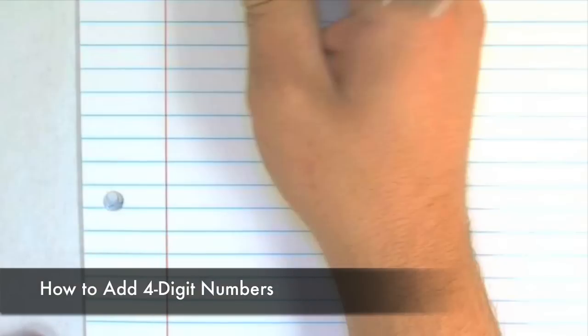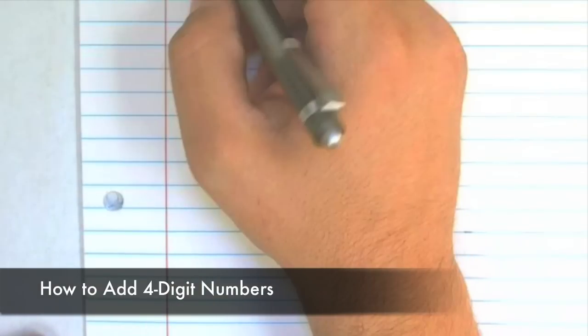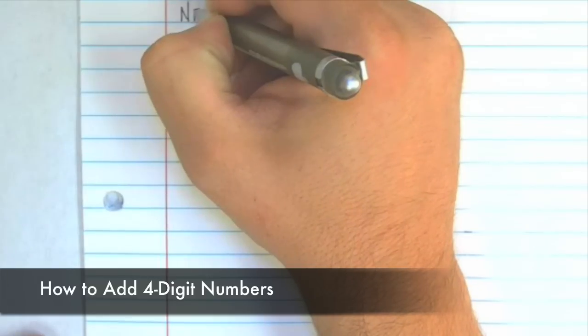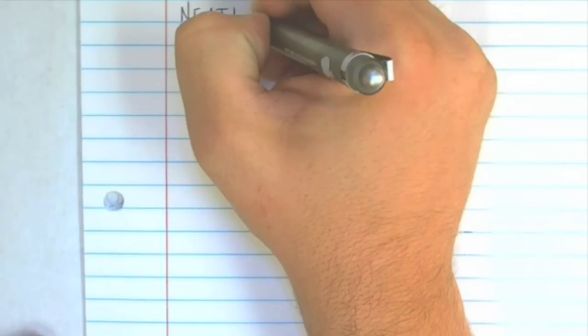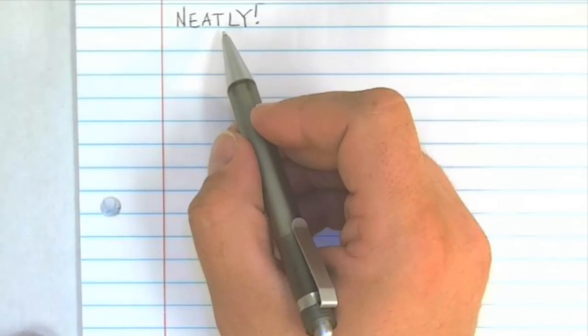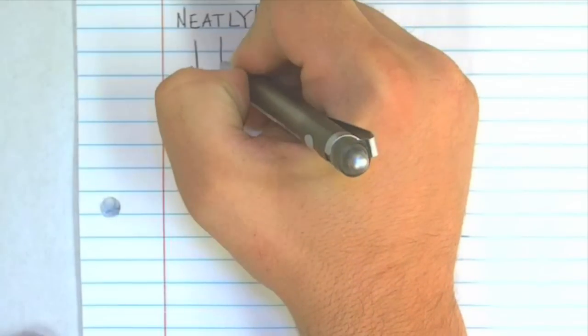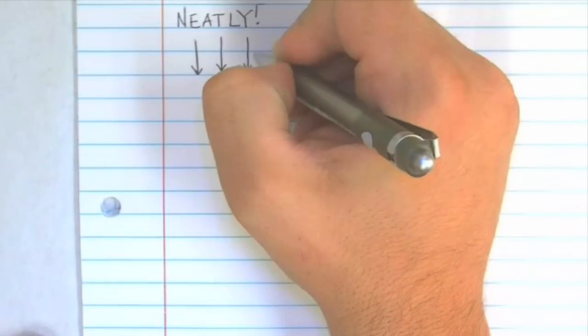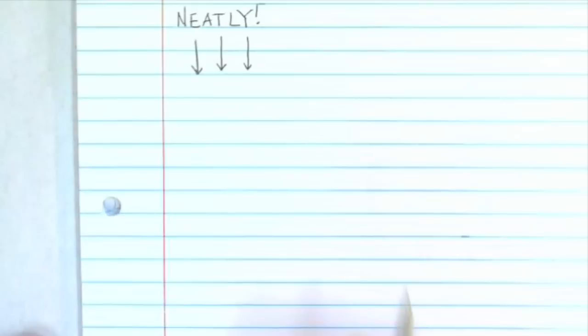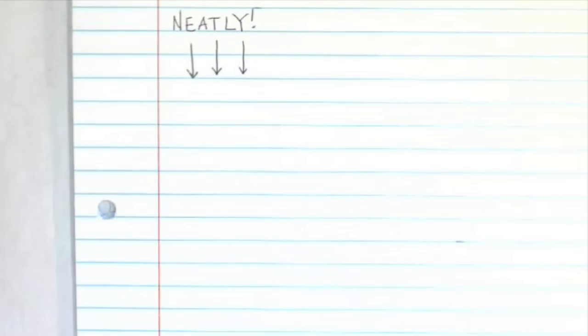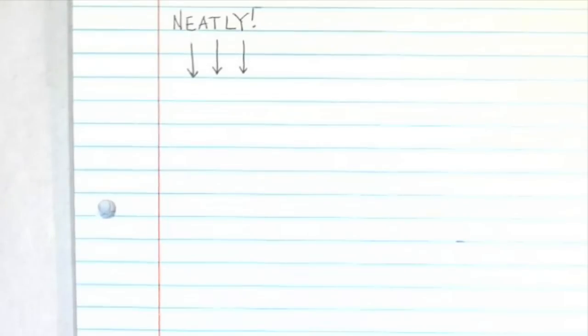So again, we want to start off with a tip and we want to make sure that we write neatly. And not only do we want to make sure our numbers are neat, we want to make sure that the digits and decimal points and symbols are lined up correctly on top of each other. If we follow these two steps, it will help us be a lot more accurate.